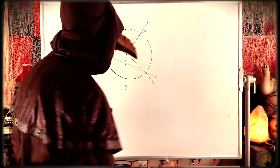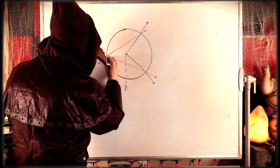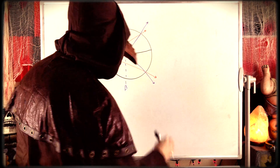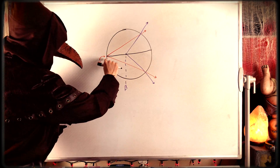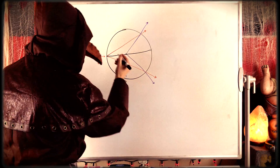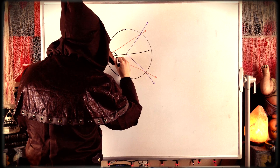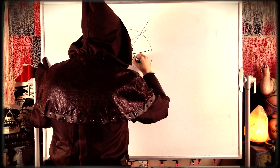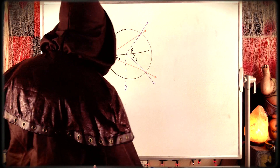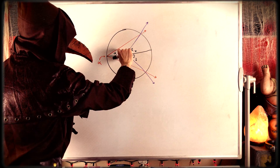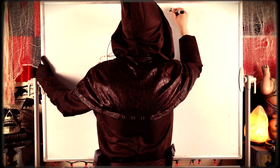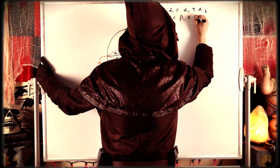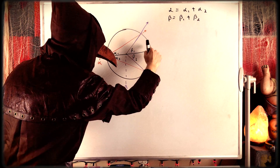The obvious option is to draw a diameter that contains the vertex of the inscribed angle and passes through the center. This diameter splits the inscribed angle alpha into two smaller angles — let's call those alpha 1 and alpha 2. It also splits our central angle beta into two smaller angles that we'll call beta 1 and beta 2. We can write: alpha equals alpha 1 plus alpha 2, and beta equals beta 1 plus beta 2.